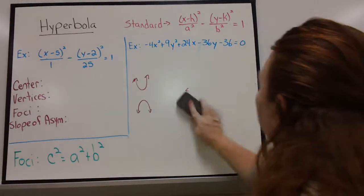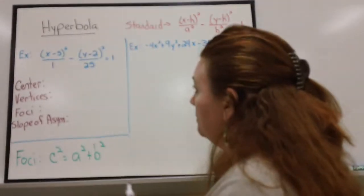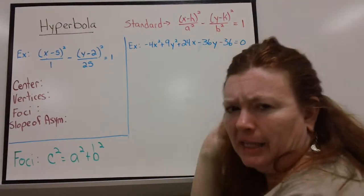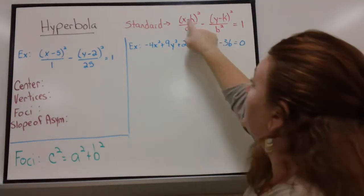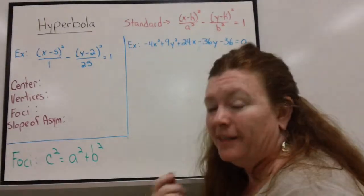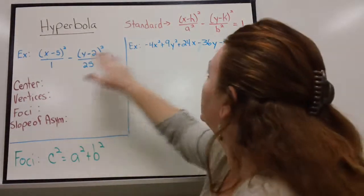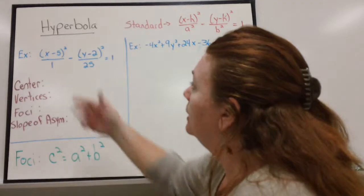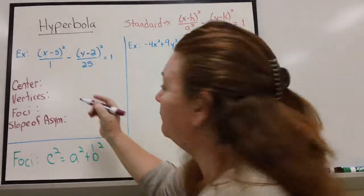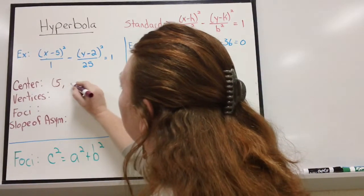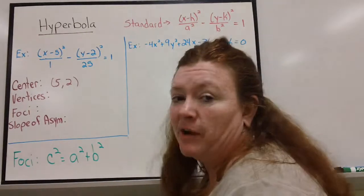Alright, so let's look at the first one because it's already in standard form. Thank heavens. Standard form looks exactly like an ellipse with only one difference, and that would be this minus sign. When the squared terms are being subtracted, then you know you have a hyperbola. So standard form is here. Now the center shouldn't be too difficult. That would be at positive five and positive two. You do the opposite. So now I need to find my vertices.